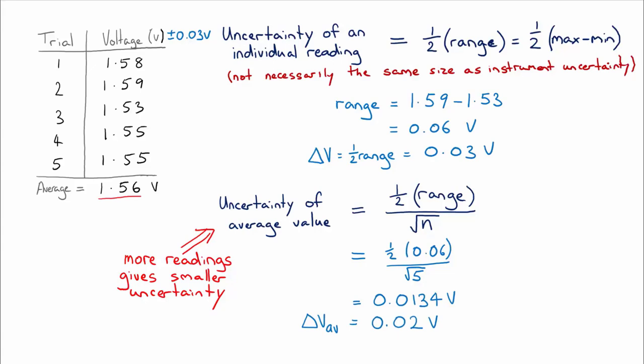And you'll notice here that the uncertainty on our average value when we looked at five readings was 0.02, whereas on an individual reading or individual measurement it would be 0.03. So the fact that we took more measurements has given us more certainty on what that average value is.